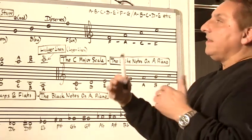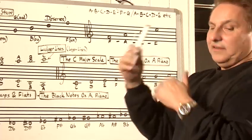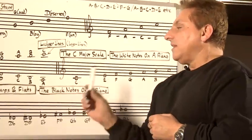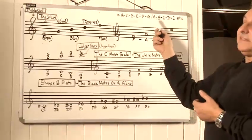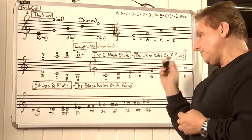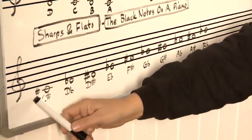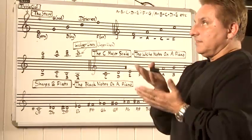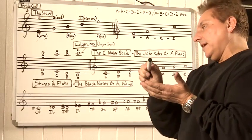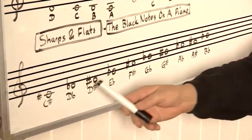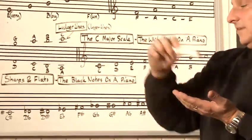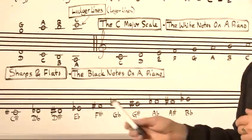Now that's not enough notes — you need the notes in between, which are the black notes on the piano. You get these using sharps and flats. A sharp is this sign, which raises a note up what's called a semitone — you go up to the very next note. And then a flat takes a note down a semitone to the very next note next to it.